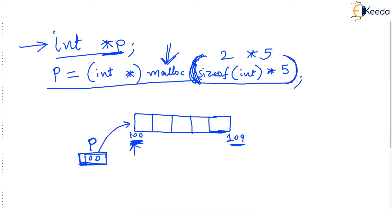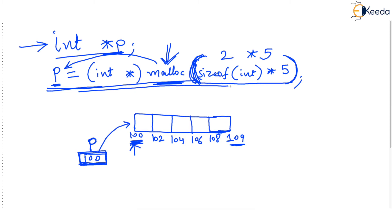The first address, the begin address, will be loaded in the left-hand side pointer p. So this complete sentence can be read as: p stores the begin address of the newly allocated bytes — p is storing 100. Now 100 and 101, the first two bytes, can store the first integer; 102 and 103 the second integer; 104 and 105 the third; 106 and 107 the fourth; and 108 and 109 can store the last integer. So by writing this line I have allocated 10 bytes, which is a home for five integers stored sequentially.